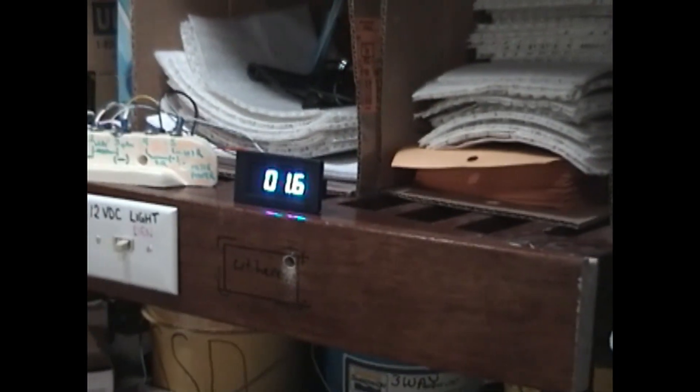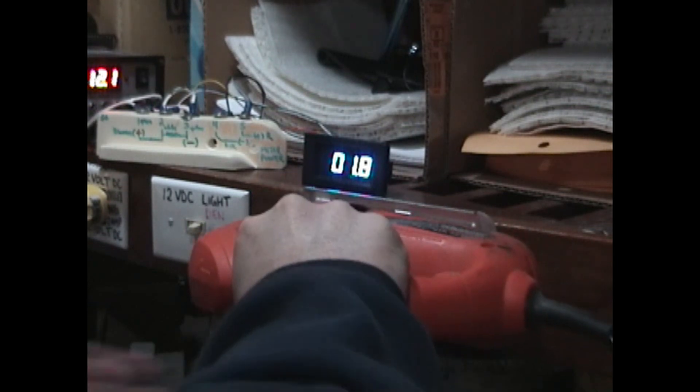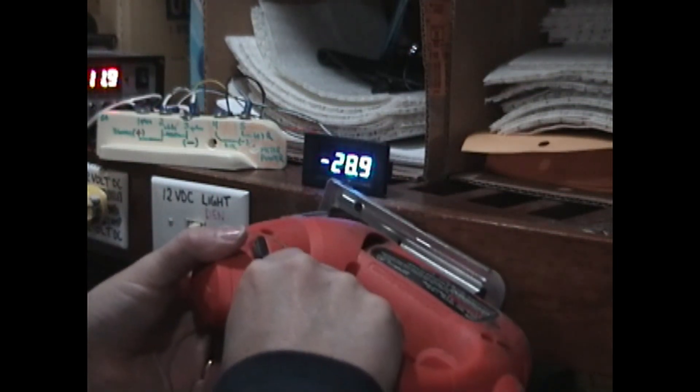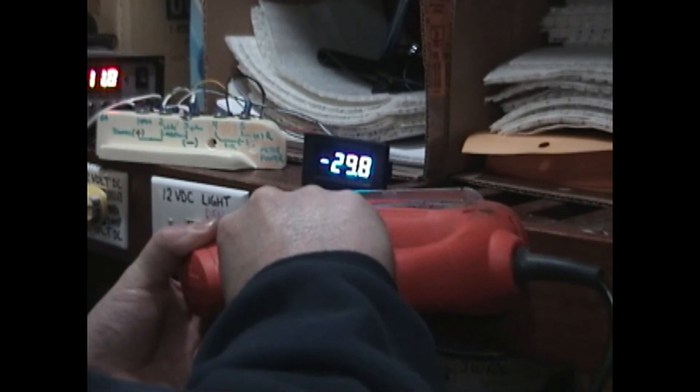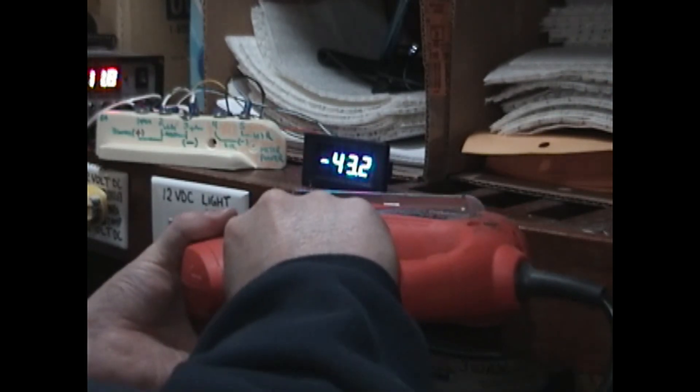Right now we still have 1.6 amps going into our energy storage unit. As we turn on this jigsaw, you can see that it's drawing about 30 amps, DC amps, under load. With no load right now, going into the storage unit, 1.7 amps. Of course we do have some DC lighting on as well as the inverter power.